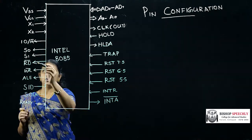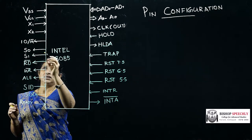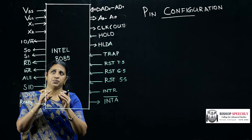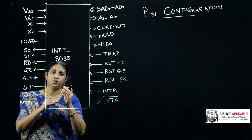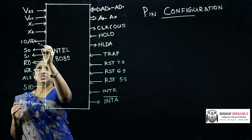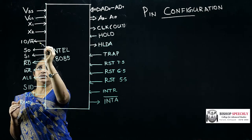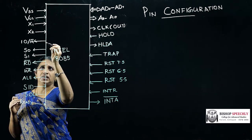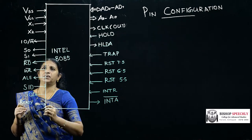The next pin is IO/M̄. It is used for indicating whether the operation in this processor is for an input output operation or for a memory operation. In this pin if there is a high value it indicates an input or output operation and if this pin has a low value it indicates a memory operation.